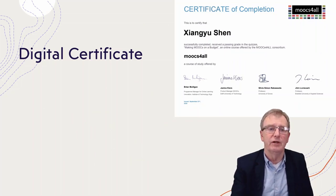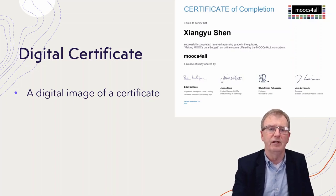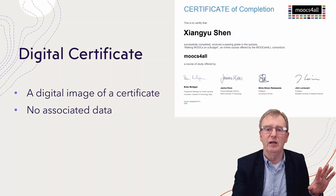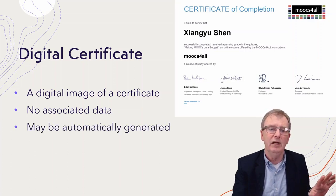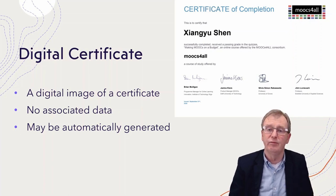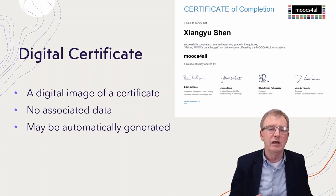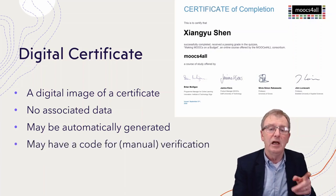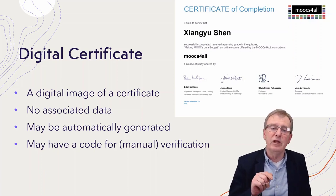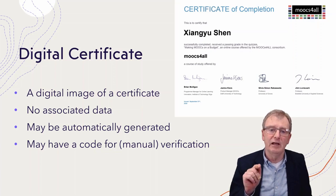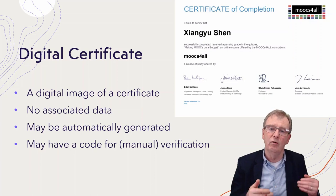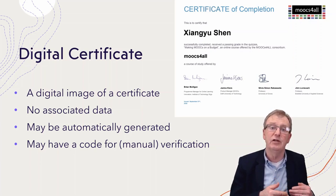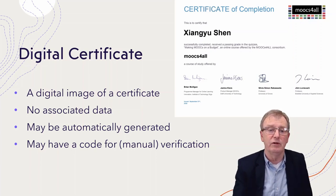A digital certificate, as opposed to a digital credential, is really just an image of a certificate — there's no associated data beyond that image. These can be automatically generated from a learning management system. In other words, when the system knows that you've completed the course and got the required grades, it can automatically generate one with your name on it and a relevant date. They may also put a unique code on it, which can be used to verify that you completed that course satisfactorily, so a potential employer or college can use that code to check back with the college to confirm.